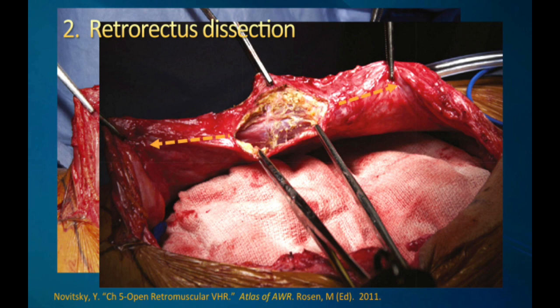Another important thing to ensure is that you do not dissect too much under the belly of the rectus muscle. As you dissect superiorly, there's a tendency to get off that half centimeter to a centimeter off the edge and start to dissect under the middle of the belly of the rectus muscle. If you do that, you're going to lose out on a lot of posterior rectus sheath. So as you start to do your dissection superiorly and inferiorly, make sure you're staying just off of the edge of midline.